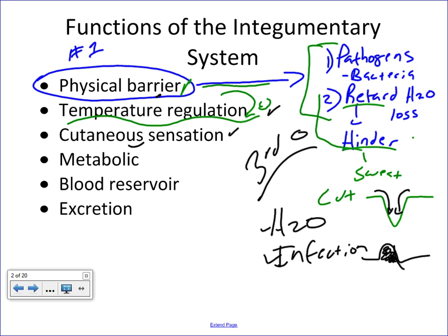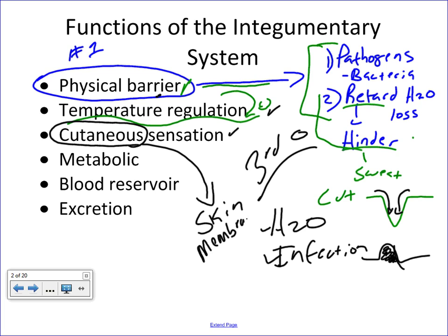Cutaneous sensation. Whenever you see the word cutaneous, you should automatically think skin — it's one of those membrane terms. What we're saying with cutaneous sensation is that there are sensory receptors within the skin for touch, temperature, and pain, which is essentially extreme heat or extreme touch, meaning pressure.